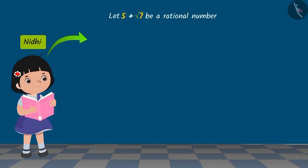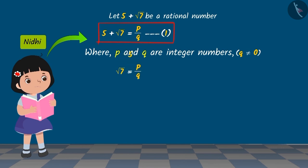Nidhi assumes that 5 plus square root of 7 is a rational number which is written as P upon Q, where P and Q are integers. On rearranging equation 1, we get square root of 7 equals to P minus 5Q upon Q.